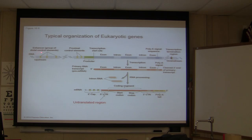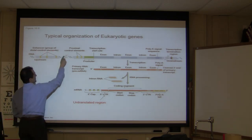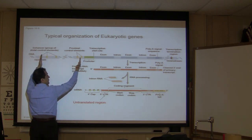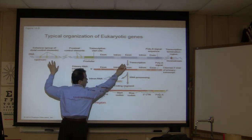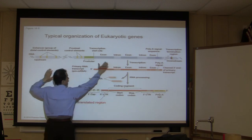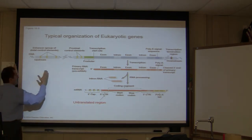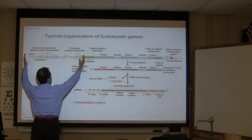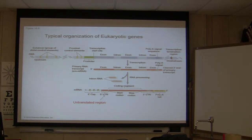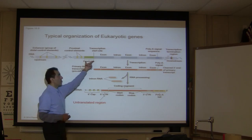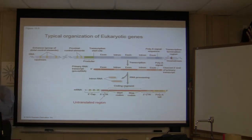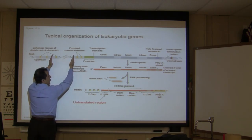The enhancer is a group of distal control elements. Those two slash lines mean there is a good distance of DNA between this enhancer and the promoter region right here. We call this region an operon — the promoter and everything else. There is a segment in eukaryotic cells that controls the operon as well. The one that is close to the promoter is called the proximal control element, and the one that is distant is called the distal control element.